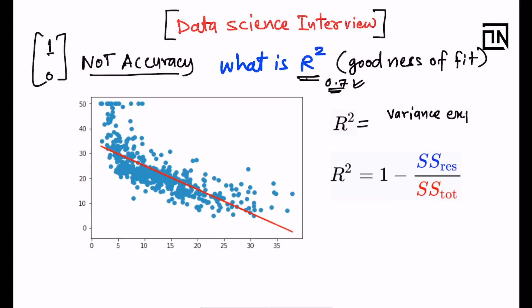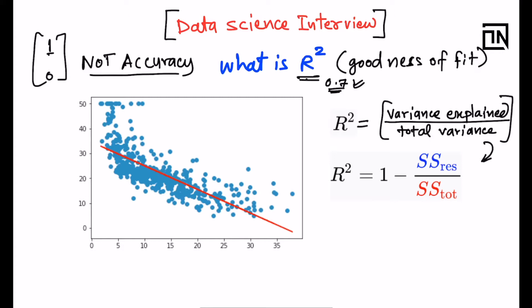More precisely, it is variance explained divided by the total variance present in the data. We'll shortly understand how this simple definition maps mathematically to the formula: R squared equals 1 minus sum of squared residuals divided by sum of squares total.